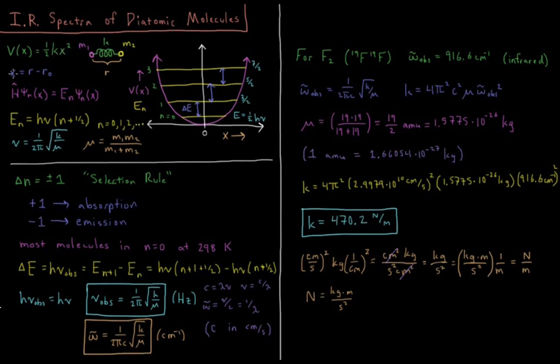x is the displacement away from the equilibrium bond length r-naught, where x equals r minus r-naught, with r being the current bond length.